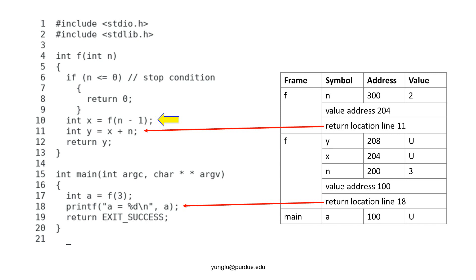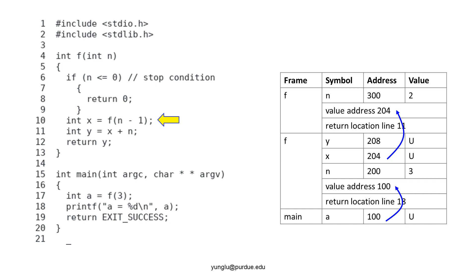We also need to pay attention to the value address. When f is called the first time by the main function, the value address is the address of the local variable a inside the main function. The value address is 100. When f is called the second time by f, the value address is the address of x inside f. The value address is 204.